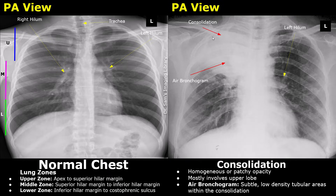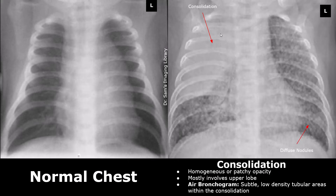Consolidation can also occur in cases of tuberculosis, although it is less common and usually involves the upper zones. This finding can overlap with pneumonia, so it needs correlation with other tests. Consolidation appears as a bright, radiopaque, homogeneous or patchy opacity in the lung and will show subtle, low-density, radiolucent tubular structures representing air-filled bronchi within the consolidation — these are called air bronchograms, and their presence usually indicates consolidation rather than lung collapse. Here is a case of tuberculosis in a pediatric patient showing consolidation in the right upper and middle zones, with numerous tiny nodules in both lungs indicating miliary tuberculosis.